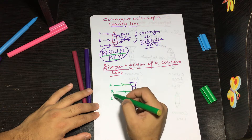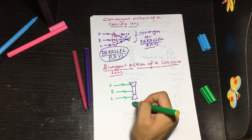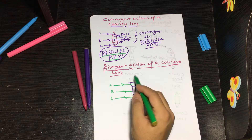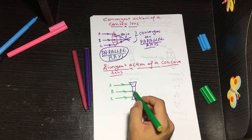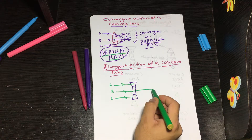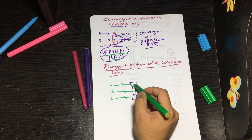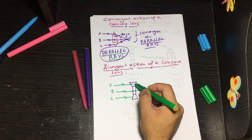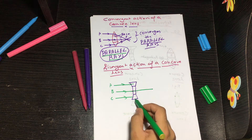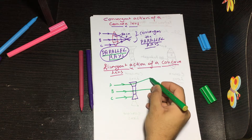Ray A falls on the upper side, ray B on the central side, and ray C on the bottom side. As established, ray B is incident on the central slab and goes straight — undeviated. For ray A on the upper prism, the base is on the top side, so the ray moves upward toward that base. For ray C on the lower prism, the base is on the bottom, so the ray moves downward toward its base.